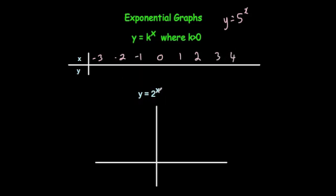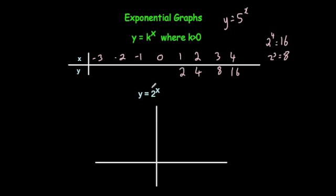Let's start off with the positive ones. So 2 to the power of x: if x is equal to 4, you get 2 to the power of 4, and 2 times 2 times 2 times 2 is equal to 16. 2 to the power of 3 is 8. Whenever x is equal to 2, you get 2 squared, which is 4. 2 to the power of 1 is 2. And 2 to the power of 0 — any number to the power of 0 — is equal to 1.